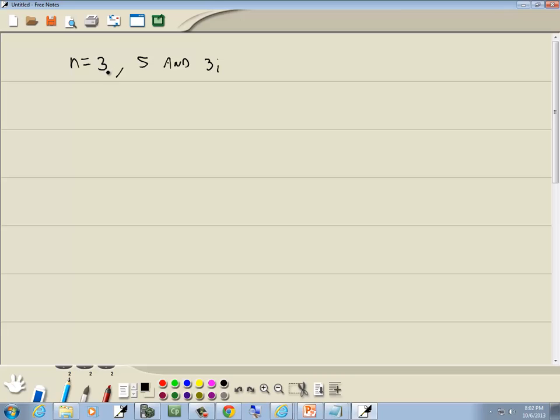Now when we say n equals 3, this tells us how many answers we're going to have, how many zeros we're going to have. It also refers to our degree. They tell us 5 and 3i, and they didn't say it, but those are zeros. Probably left off the instructions when I typed it up.